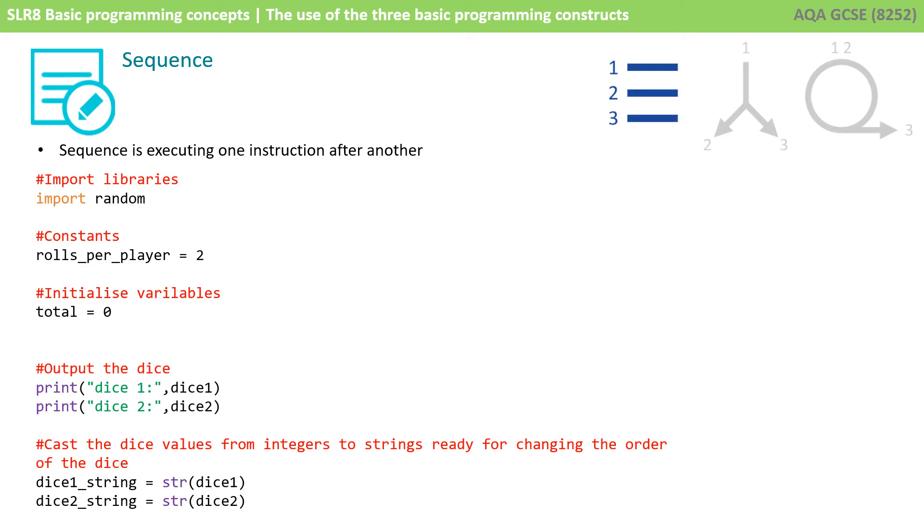The first of the three programming constructs and the most simple and straightforward is sequence, and sequence literally means executing one instruction after another. By default, if your program isn't doing selection or iteration or anything else special, it is always working in sequence. That's simply executing one line and then moving on and executing the next line and then the next and so on.